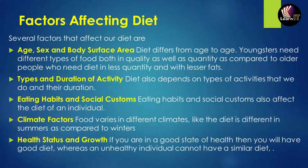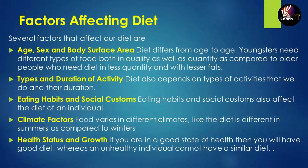The next factor is eating habits and social customs. Eating habits and social customs also affect the diet of an individual — whether they are watching TV while eating, working while eating, or eating around other people. These environmental circumstances influence how much and what a person eats. The next factor is climatic factors.